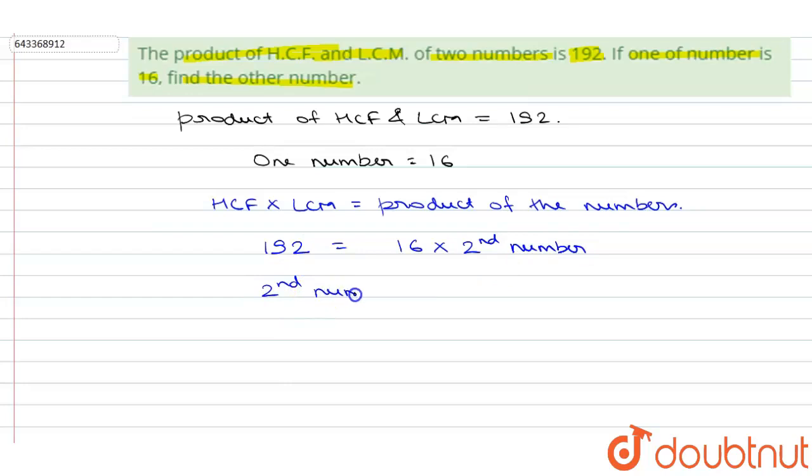When we'll take this 16 to the left hand side, it will go into the denominator or it will divide 192. So from here, when we'll solve it, we will get the second number as